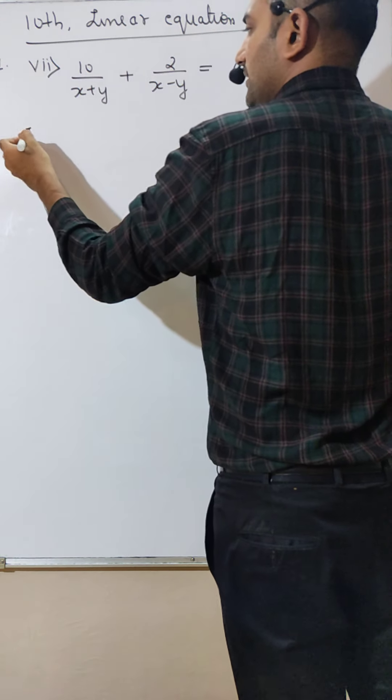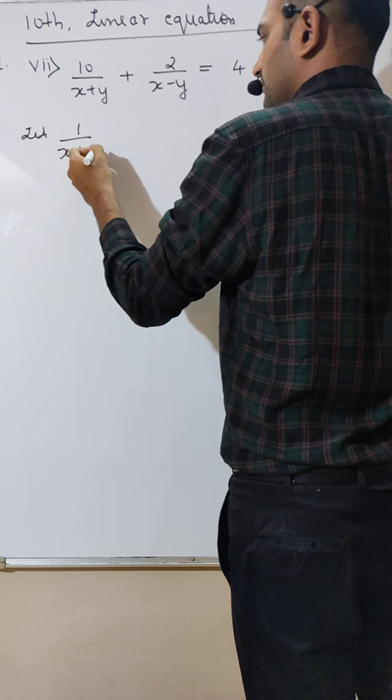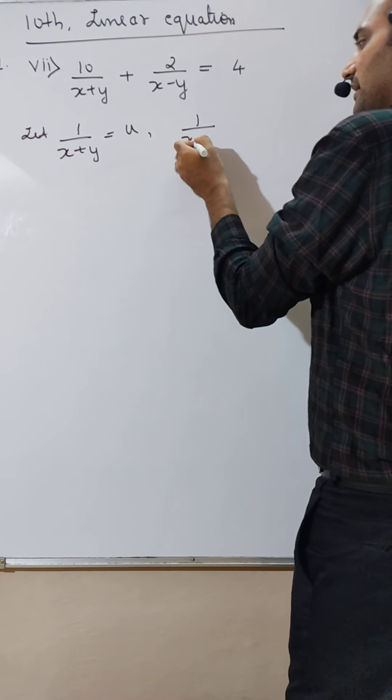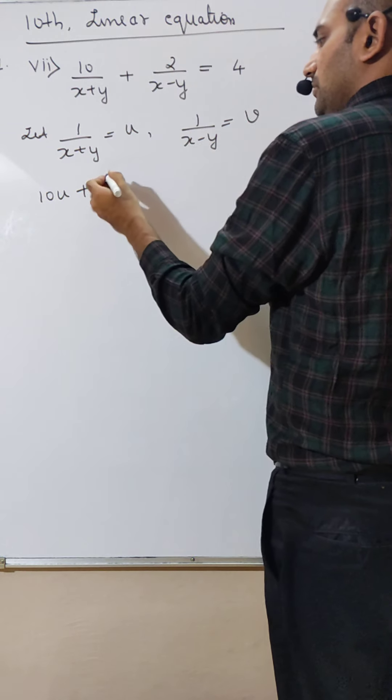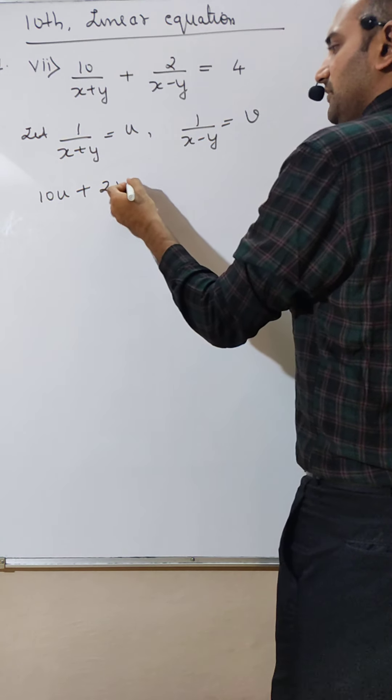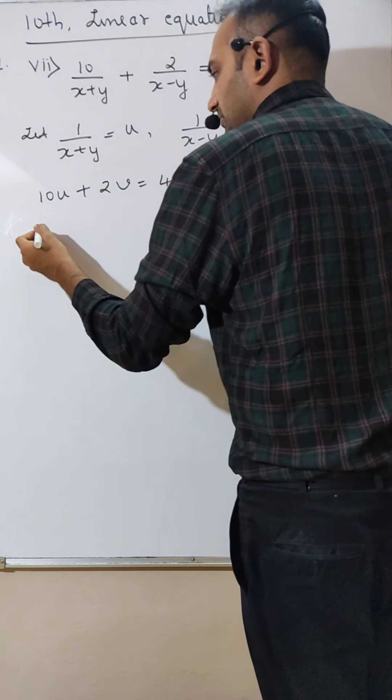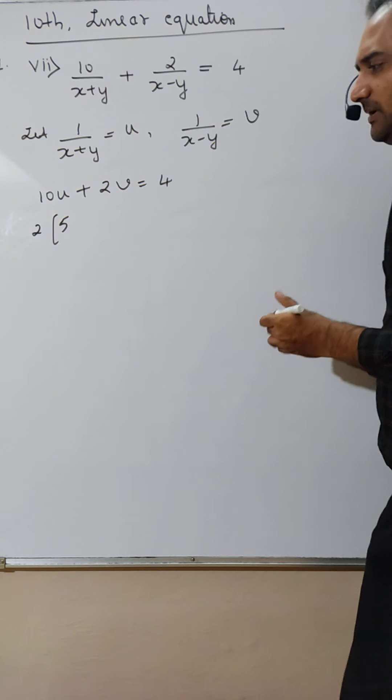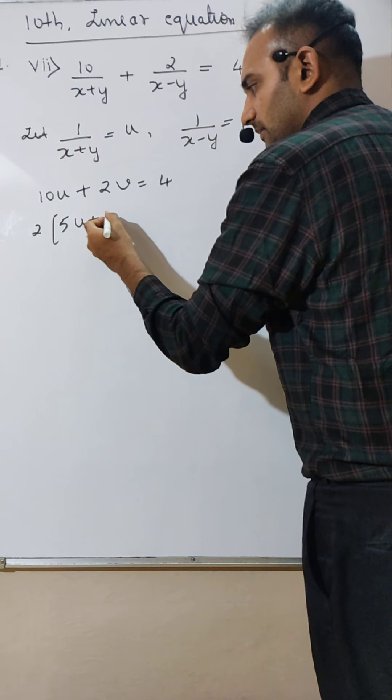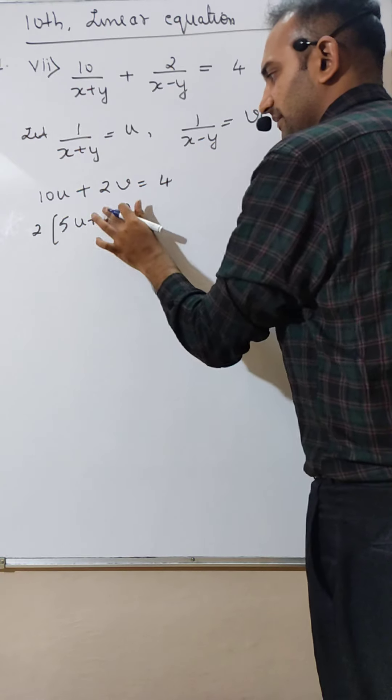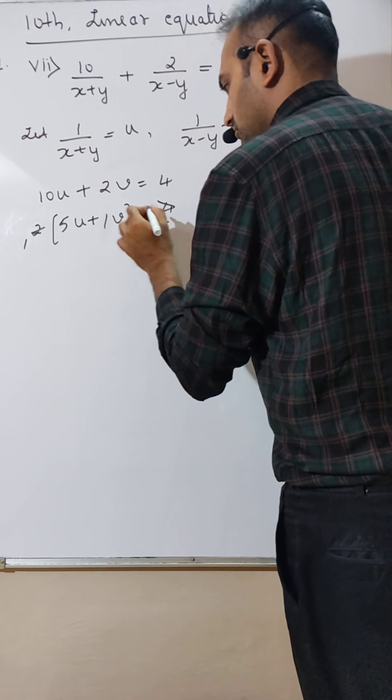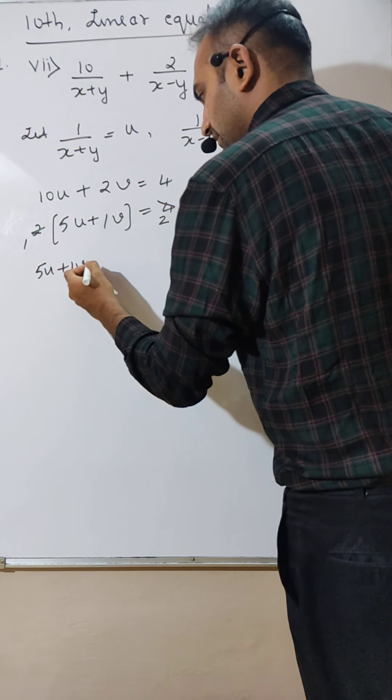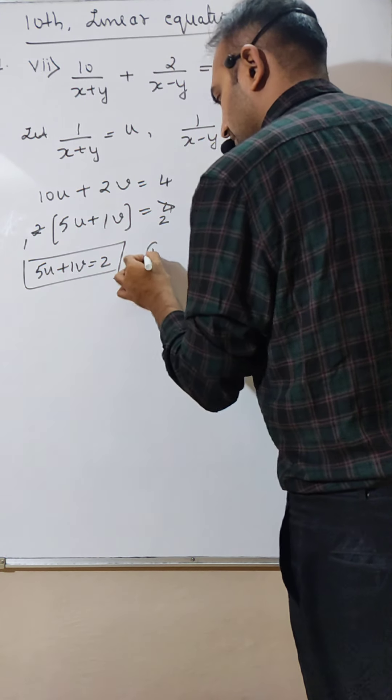See, let 1 divided by x plus y be u, and 1 divided by x minus y be v. So this becomes 10u plus 2v is equal to 4. I will take 2 common: 5u plus v is 2. That's equation number 1.